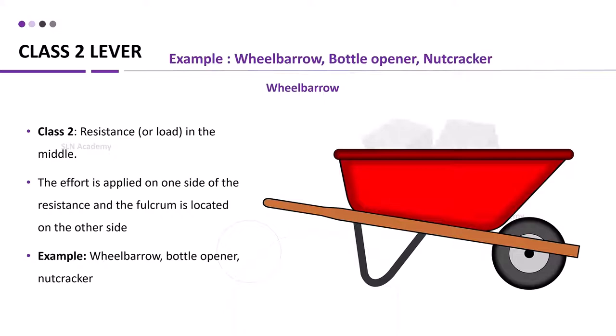Class 2 lever. For class 2 lever, resistance or load will be in the middle. The effort is applied on one side of the resistance and fulcrum is located on the another side. Example, wheelbarrow, bottle opener, nutcracker.